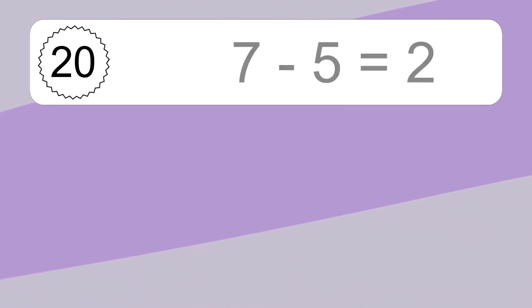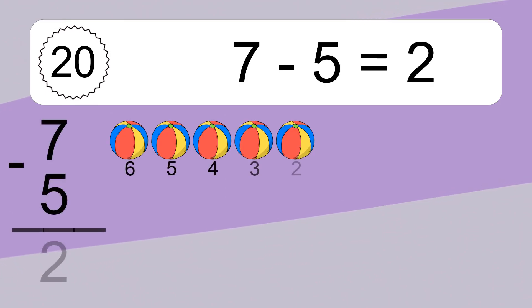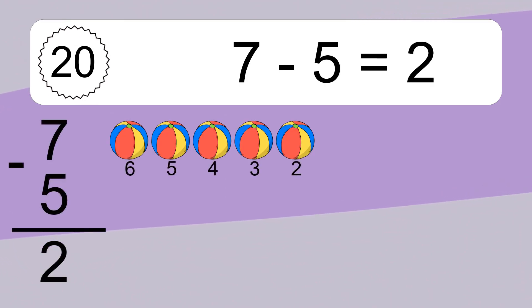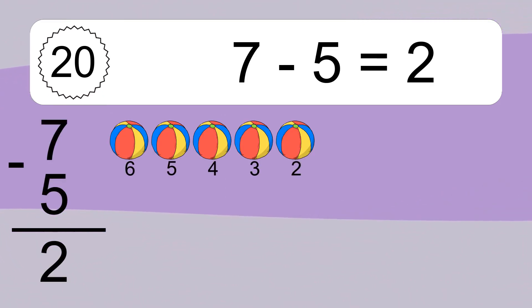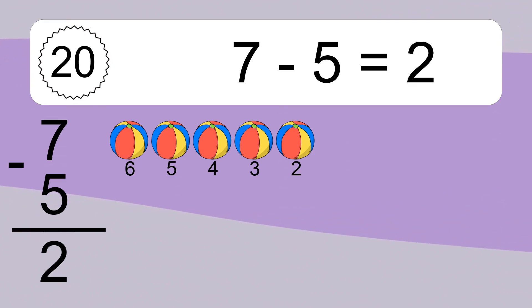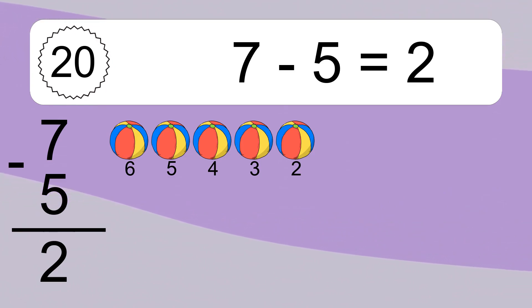7 minus 5 equals 2. Let's count it: 6, 5, 4, 3, 2.